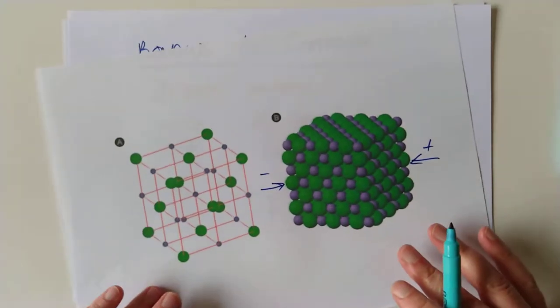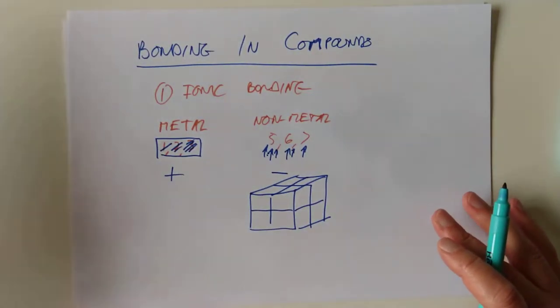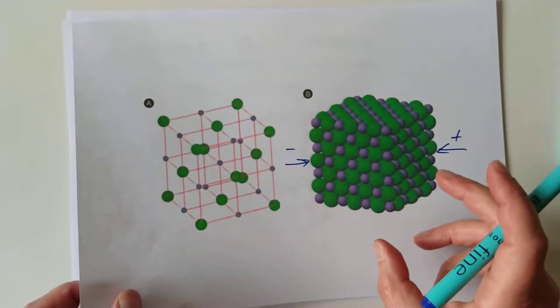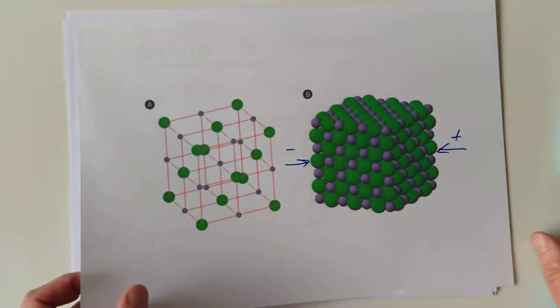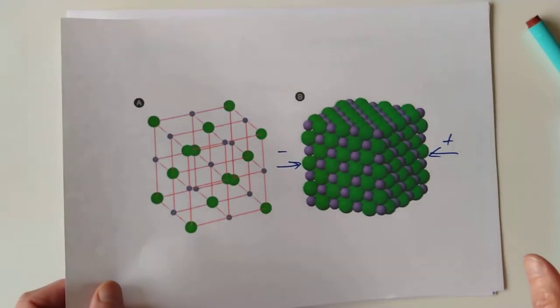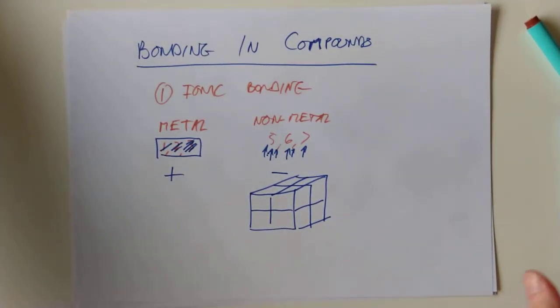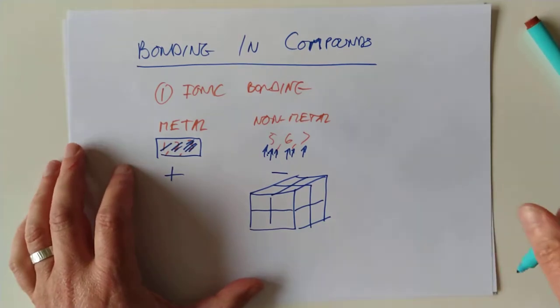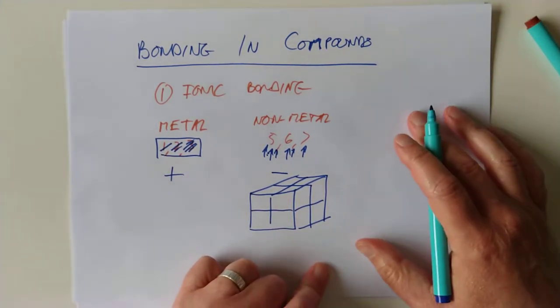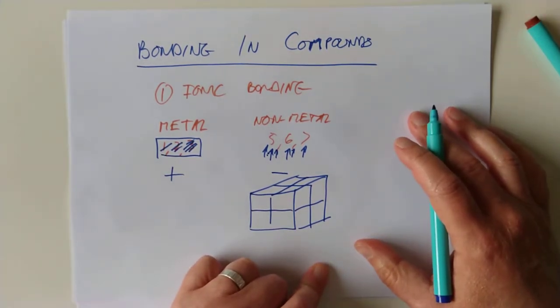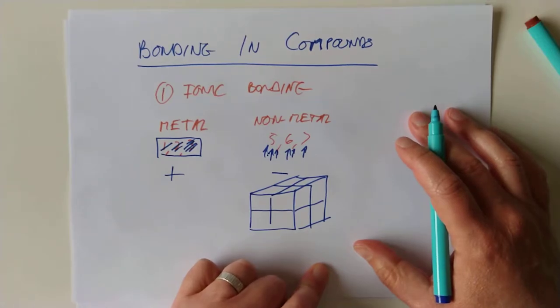However, of course, if you were to dissolve it in water or melt it, if you apply enough heat you can melt salt. If you were with me in third year, that's what we did in a test tube, you can get molten salt. So if you dissolve or melt ionic compounds, the ions can move. In other words, they become electrical conductors.